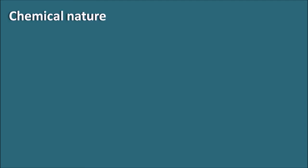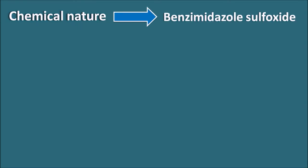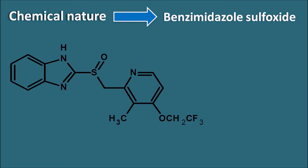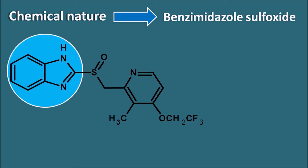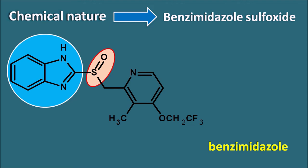Now let us see the chemical nature of Lansoprazole. As a proton pump inhibitor, it belongs to the chemical class of benzimidazole sulfoxides. The structure of Lansoprazole contains a heterocyclic benzimidazole ring system attached with a sulfoxide group at the second position. So Lansoprazole is a benzimidazole sulfoxide derivative. In the IUPAC name, the core is benzimidazole attached with a methyl sulfoxide group at the second position.